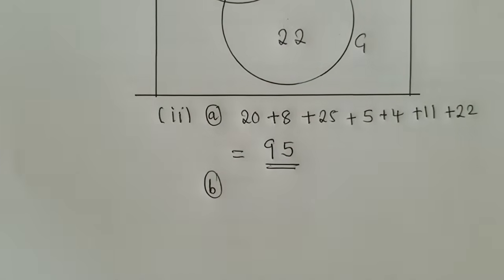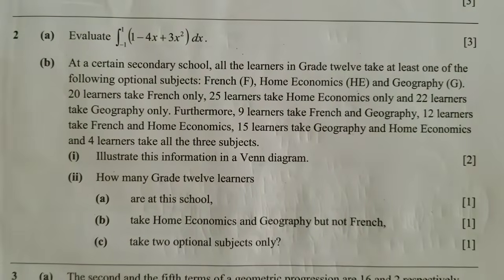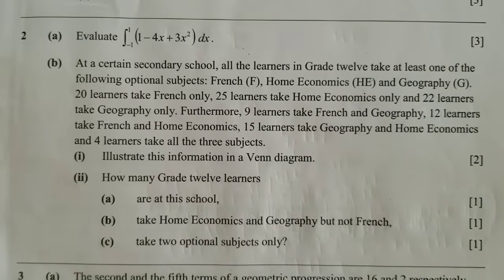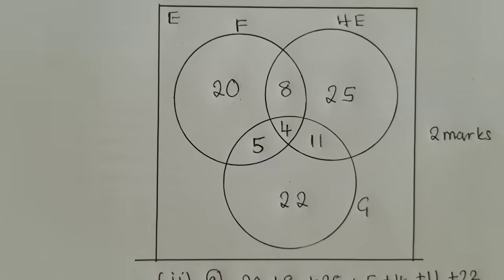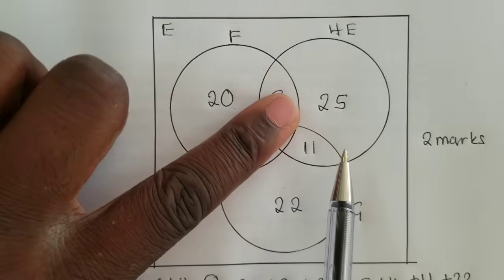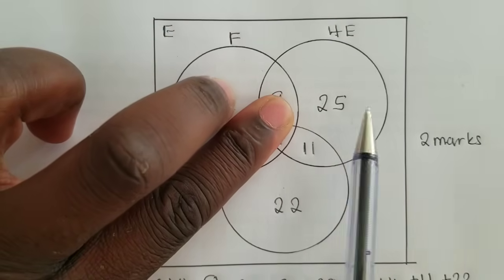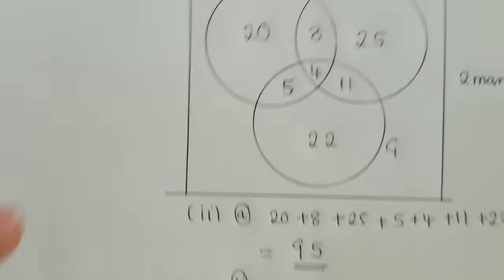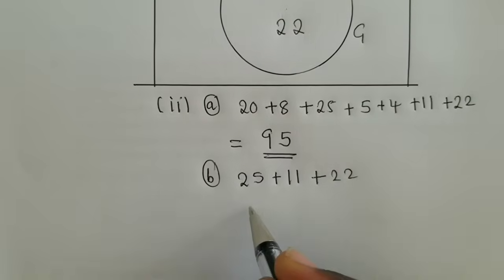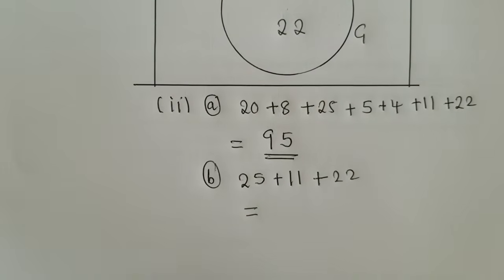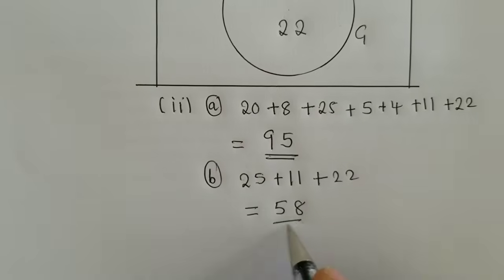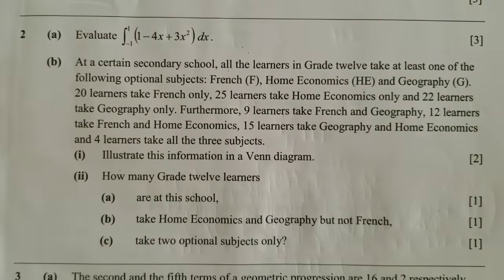We go to the next question which is question B. For question B they are saying how many grade 12 learners take home economics and geography but not French. This is F complement, the complement of F. What you do, since they have said not French, just get your Venn diagram, try to hide all the numbers that are found in French and look at the numbers that are remaining. That is 25, 11, and 22. So we're going to say 25 plus 11 plus a 22. When you punch on your calculator 25 plus 11 plus 22, I guess you are getting a 58. So this is 58.